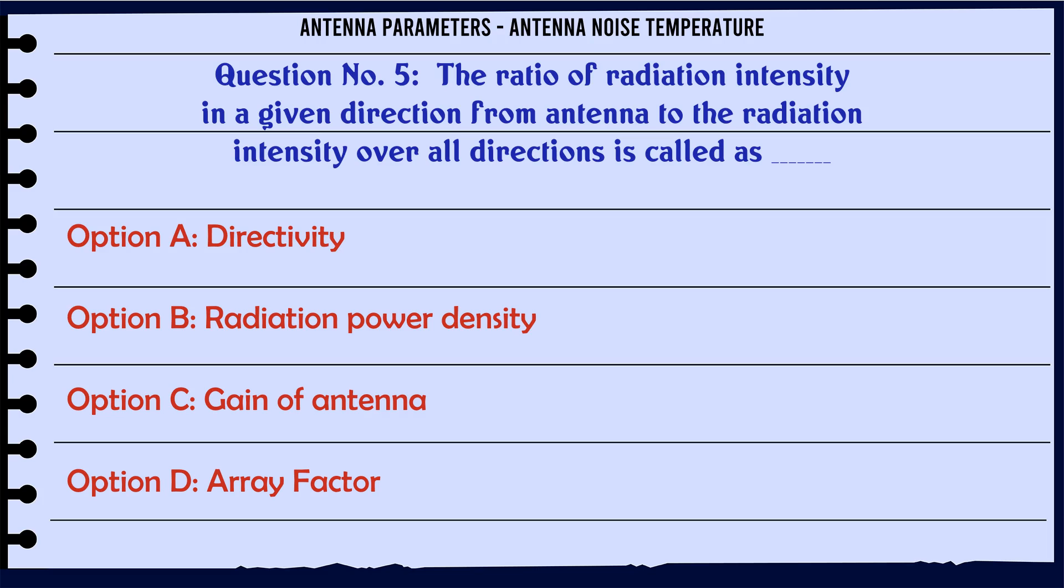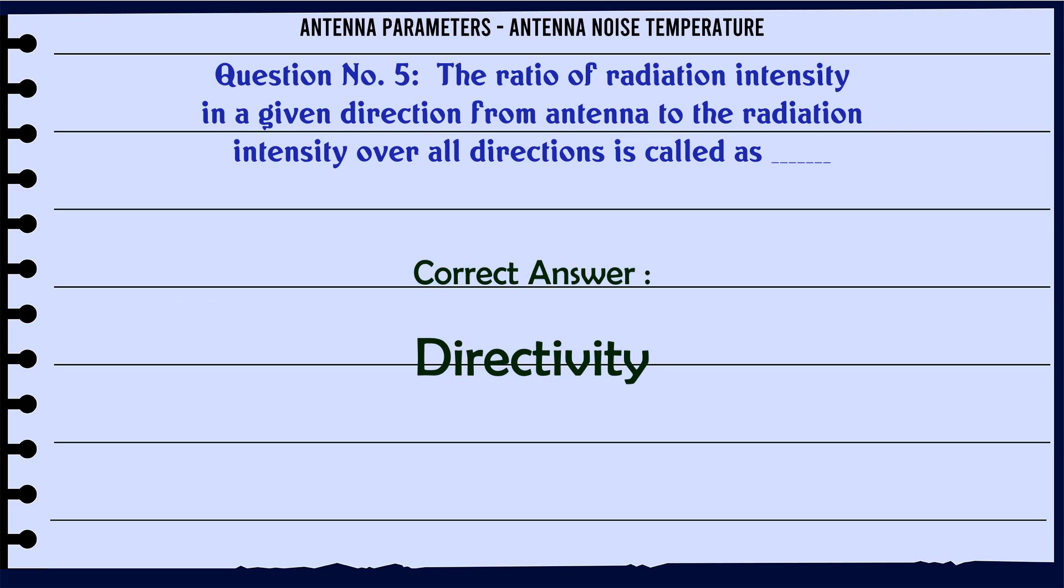The ratio of radiation intensity in a given direction from antenna to the radiation intensity over all directions is called as: Option A: directivity. Option B: radiation power density. Option C: gain of antenna. Option D: DARA factor. The correct answer is directivity.